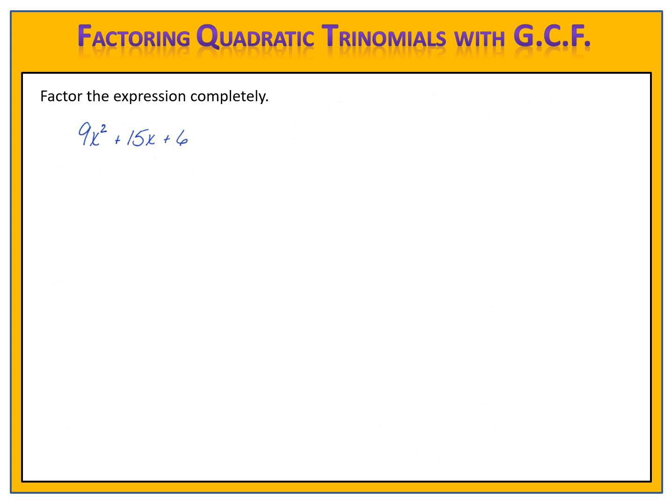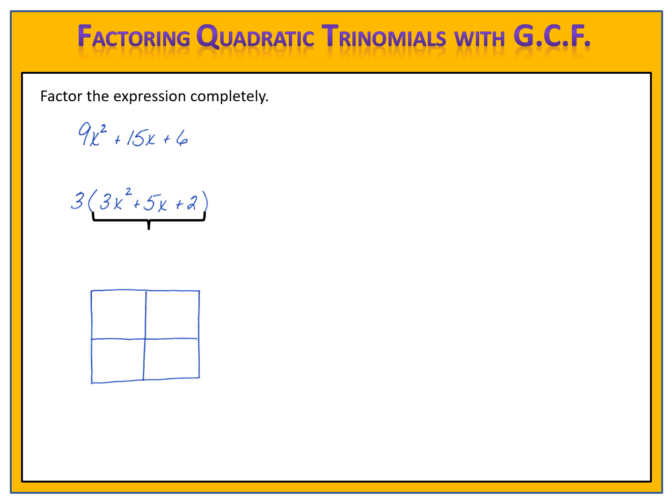Let's see how you did. We began by factoring out the greatest common factor, which is 3. When we factor out a 3, we're left with 3x squared plus 5x plus 2 in the parentheses. Now we have a trinomial in the parentheses that we can factor using the grid. We draw the grid and put 3x squared in the upper left spot and plus 2 in the bottom right spot.